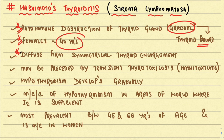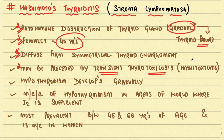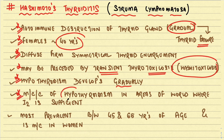It may be preceded by a transient thyrotoxicosis — Hashitoxicosis — since Hashimoto's and Graves' represent two ends of autoimmune thyroiditis and share common features. Eventually hypothyroidism develops gradually. Hashimoto's thyroiditis is the most common cause of hypothyroidism in areas where iodine is sufficient, most prevalent between 45 and 65 years of age and most commonly seen in women.